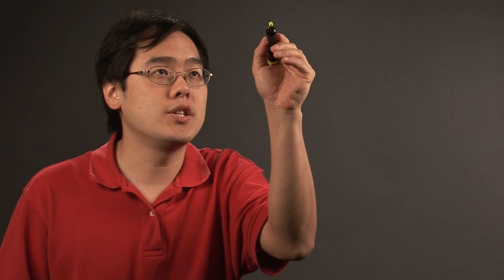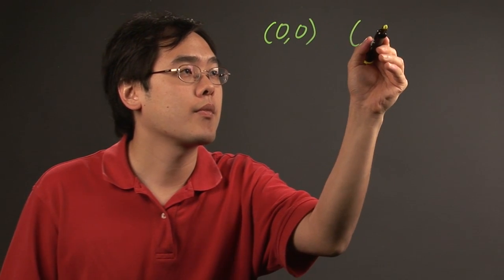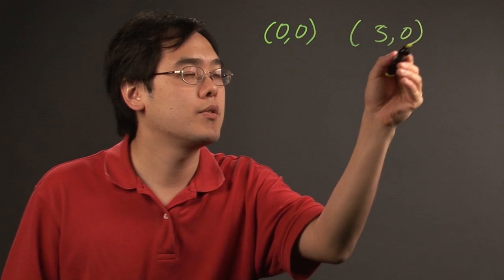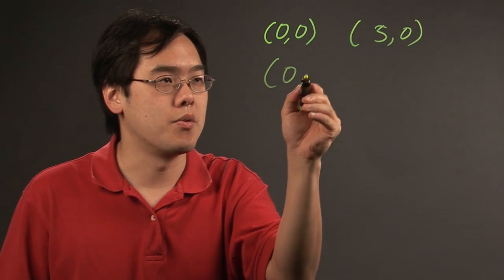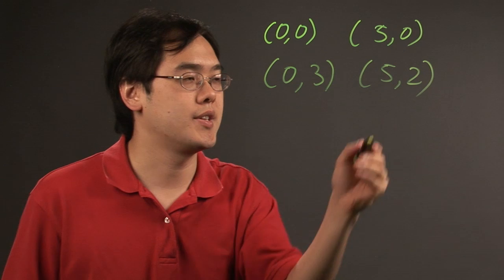So let's do an illustration and you'll see what I mean. So suppose you've got four points, let's just say (0,0), (5,0), (0,3), and let's just say (5,2), just to kind of make things up a little bit.